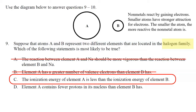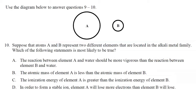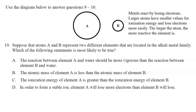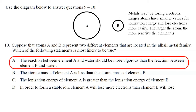Number ten uses the same diagram, but now atoms A and B are in the alkali metal family. Metals react by losing electrons; the larger the atom, the easier it is to lose electrons, giving smaller ionization energy values — so the larger the atom, the more reactive the metal. Choice A says the reaction between element A and water should be more vigorous than element B's reaction with water, which is consistent: A is larger, more reactive, and easier to lose electrons. Recall that for alkali metals lithium, sodium, potassium, rubidium, and cesium, reactions with water become much more vigorous and violent moving down from lithium to cesium.